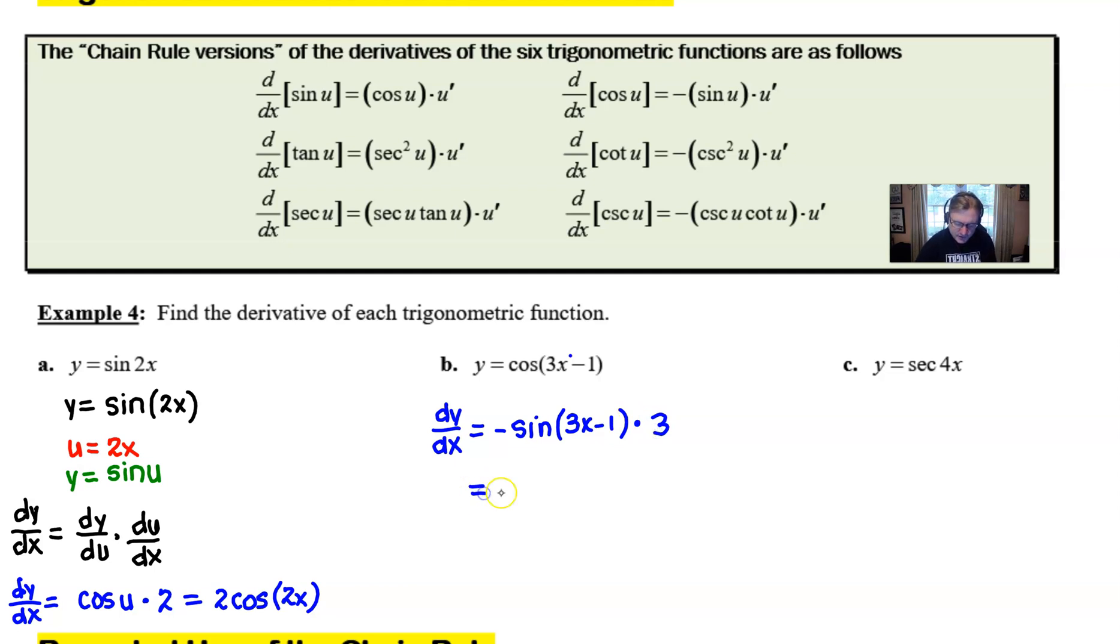And then, of course, you could float that 3 out in front alongside that negative sign. And this is the typical way that you would see this, probably on a multiple choice.